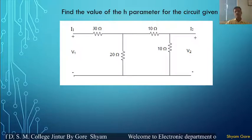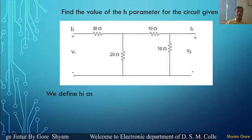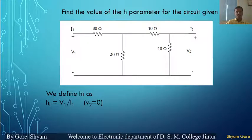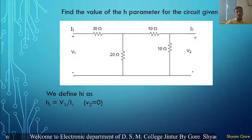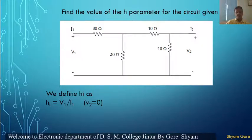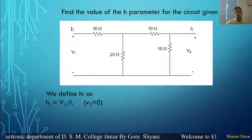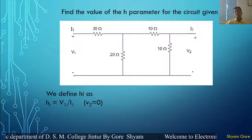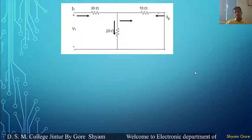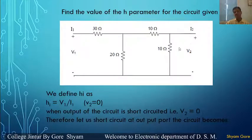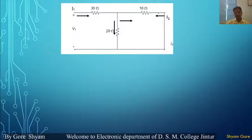First of all, let us find the input impedance. Input impedance is represented by H_i, and H_i is nothing but the input voltage divided by input current, that is V1 divided by I1. We get the input impedance when the output is short circuited, and when the output is short circuited then output voltage V2 is equal to 0. So let us short circuit the output at terminal 2-2. When the output is short circuited, the 10 ohm resistance is shorted and the circuit becomes like this.